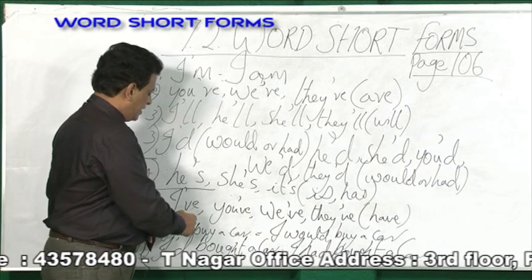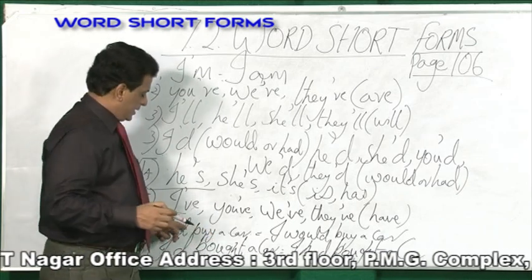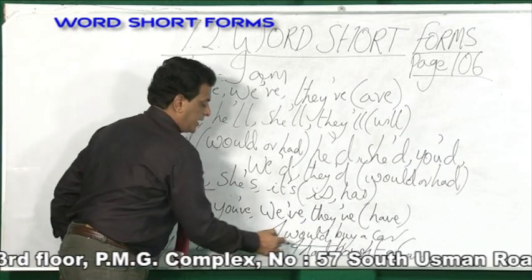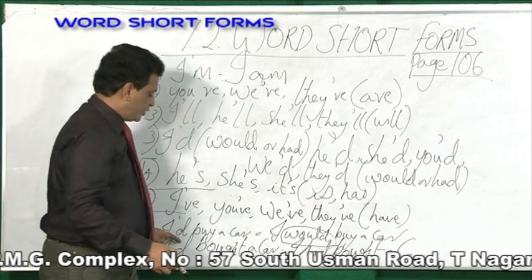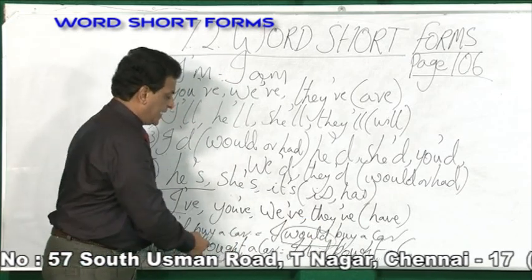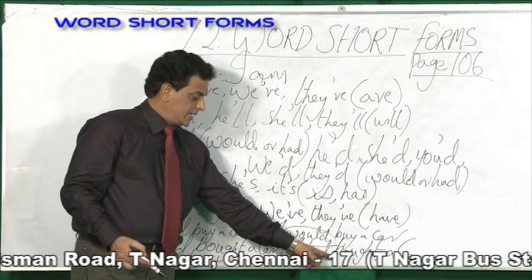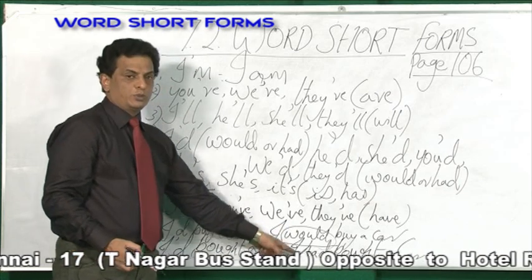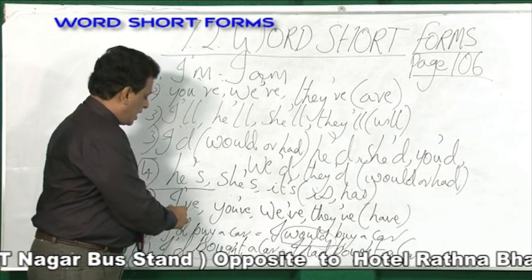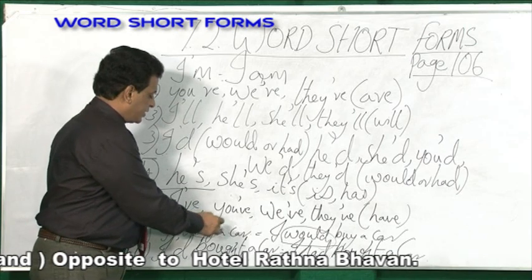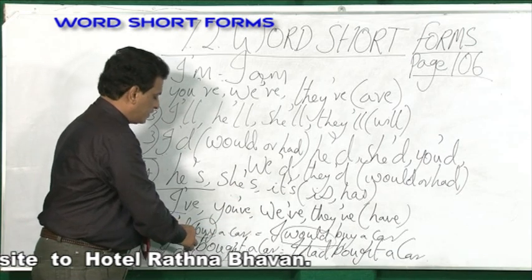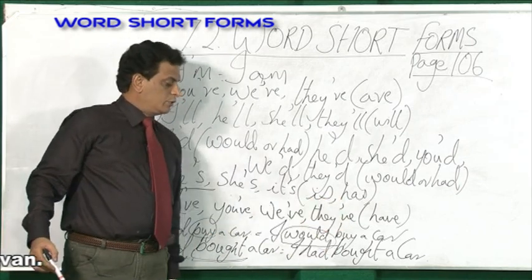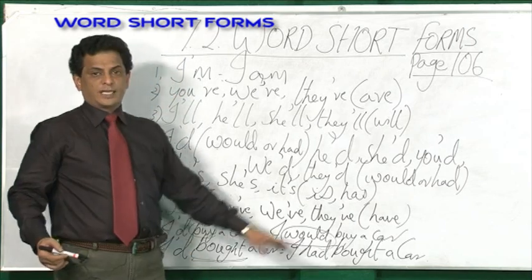Now, how do you identify whether apostrophe D means would or had? I apostrophe D — if it is followed by a present tense verb, it means would: I would buy. But if apostrophe D is followed by a past participle, it becomes a perfect sentence: I had bought a car. So the difference is: after apostrophe D, if present tense comes, it will be would; if past participle comes, it becomes a perfect sentence. Hope you are able to understand this.